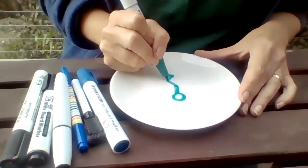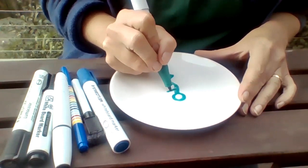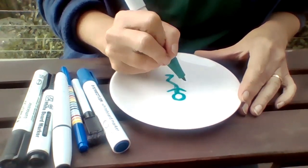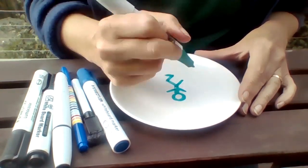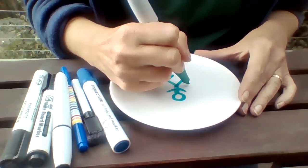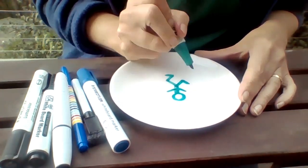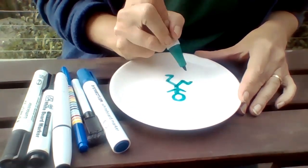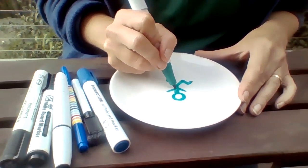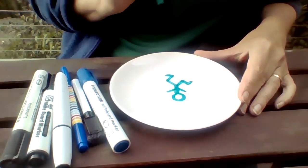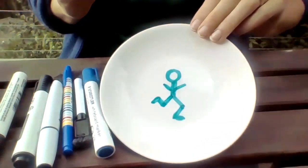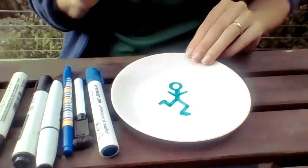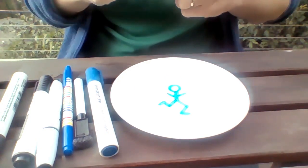Originally this experiment was called the dancing man, but we're going to have a little bit of a different slant on it today as an extension. We're going to have a racing man or a running man. Keep it nice and simple and make your lines nice and thick.